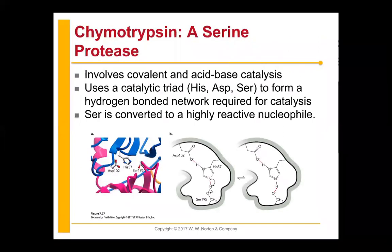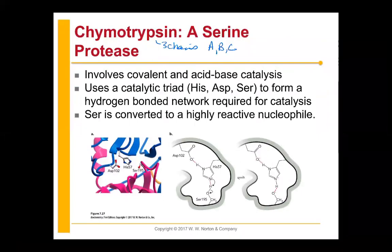Our first enzyme is chymotrypsin. We've already talked about chymotrypsin — its whole purpose is to cleave a pretty big peptide. Chymotrypsin actually has three chains: the A, B, and C chains, and those chains for the enzyme itself are covalently linked with disulfide bonds.